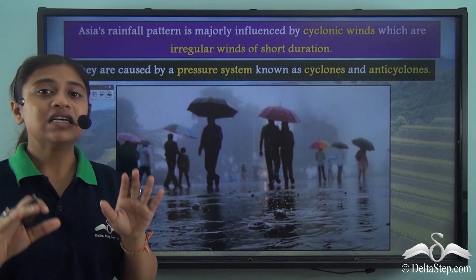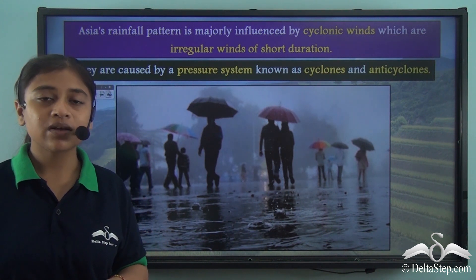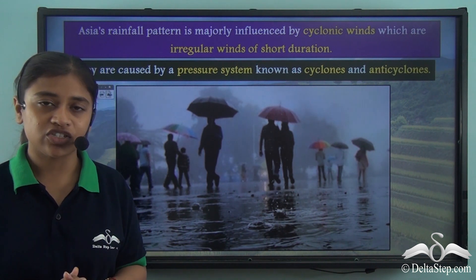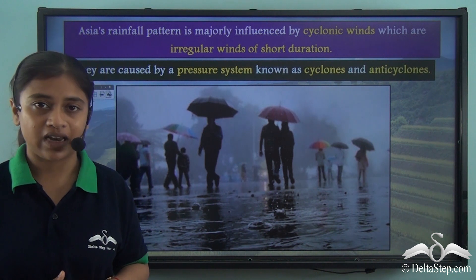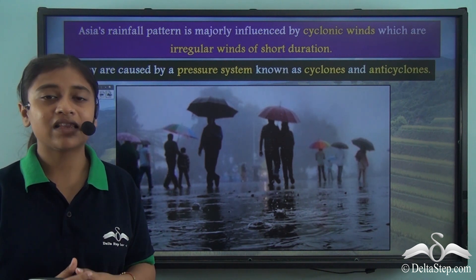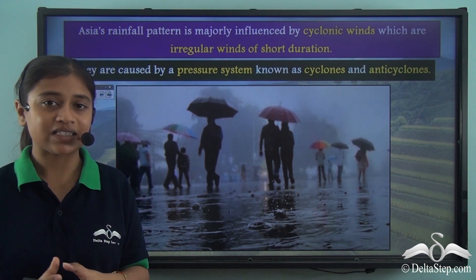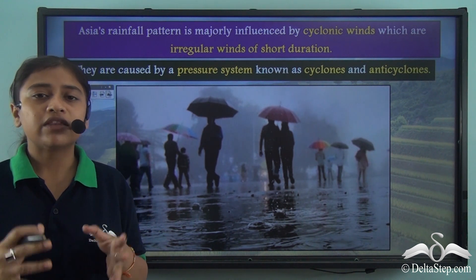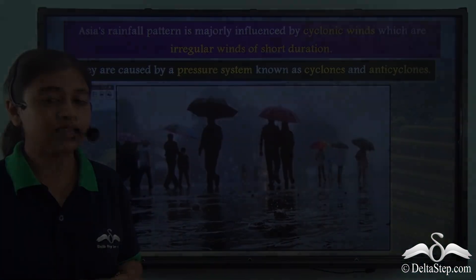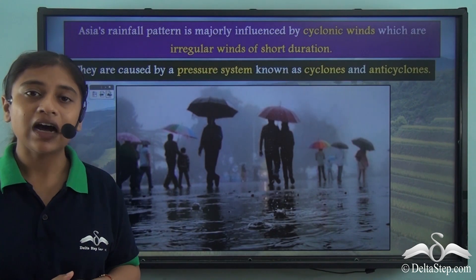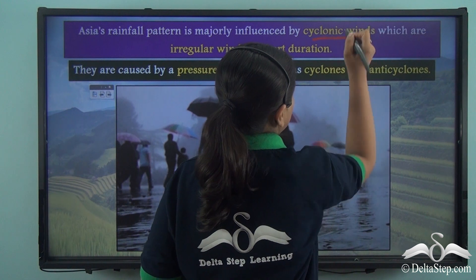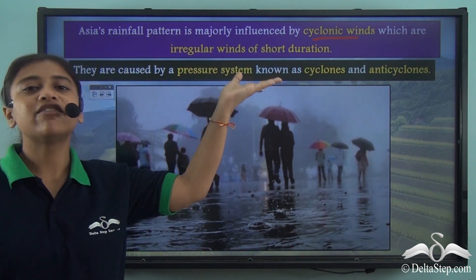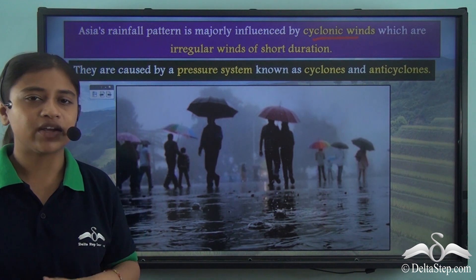Before we get into the discussion of the tropical monsoon type of climate, we need to understand that Asia's rainfall pattern is influenced by a number of factors. The first factor that influences the rainfall pattern of Asia is the cyclonic winds, which majorly influence Asia's rainfall pattern.